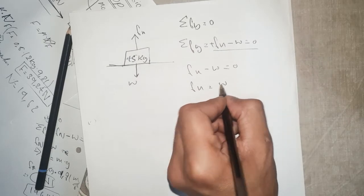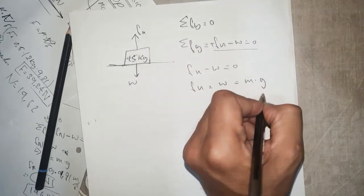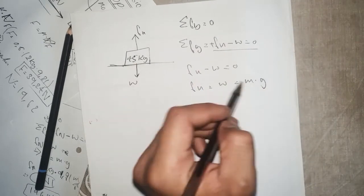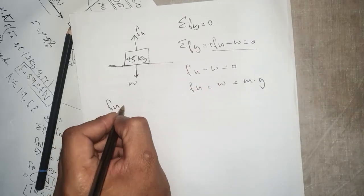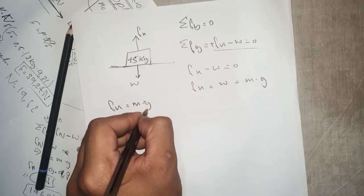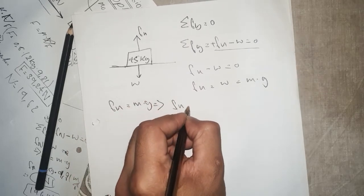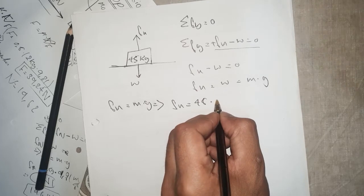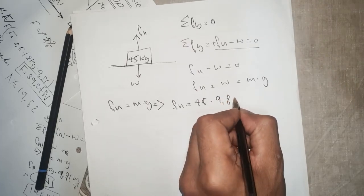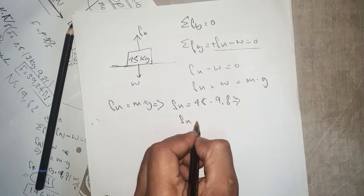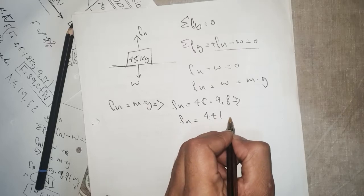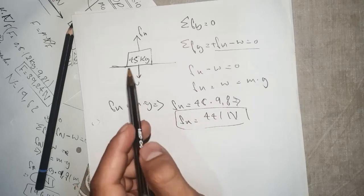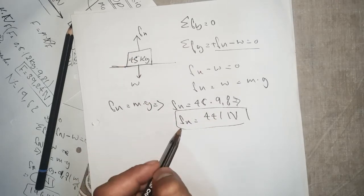We know that the weight force is mass times gravity. So normal force equals M times G. Our mass is 45 kilograms times 9.8. When we multiply those, Fn equals 441 Newtons. So this object has a normal force of 441 Newtons.